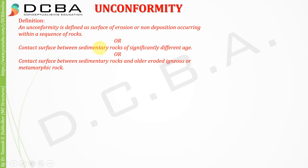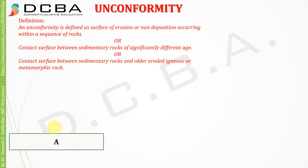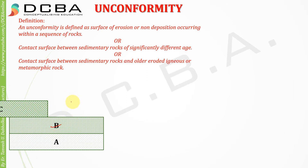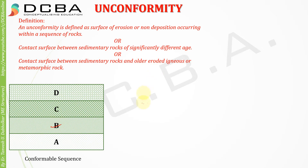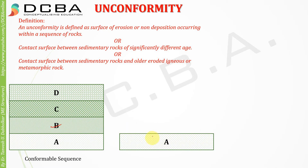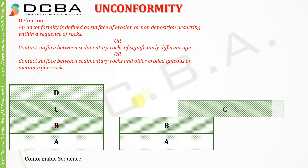Looking at these definitions, we don't get the exact idea of unconformity, so let's take an example. We have layer A, then layer B, layer C, and on top we have layer D. This sequence of A, B, C, D deposited across time is called a conformable sequence.